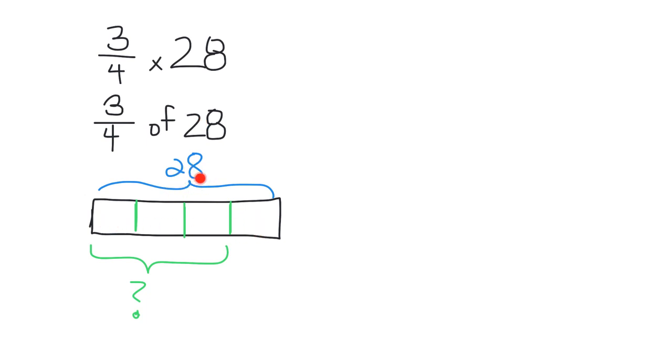Well, if we're going to take that 28 and cut it up into four parts, I can see that each part is going to be 7. And so 3/4 of 28 is going to be three sevens, which equals 21.